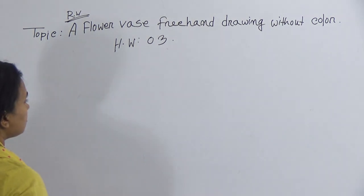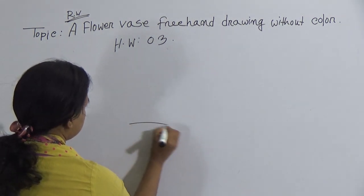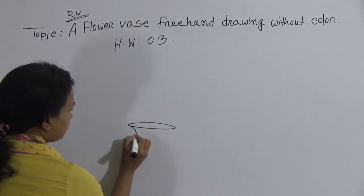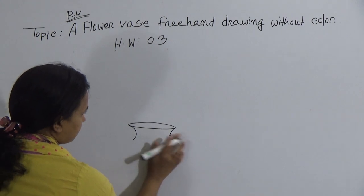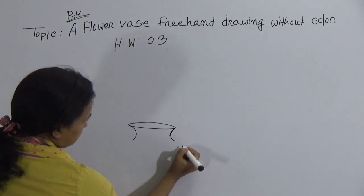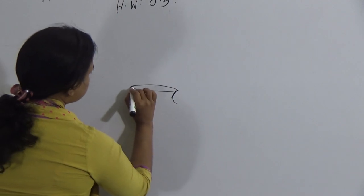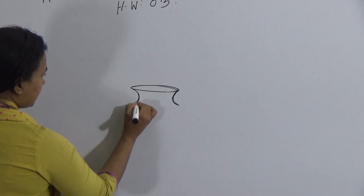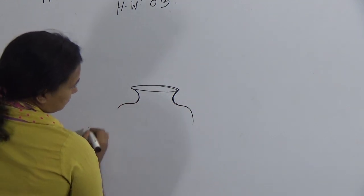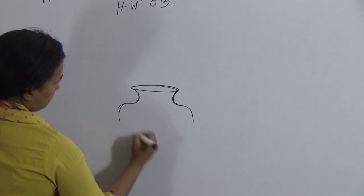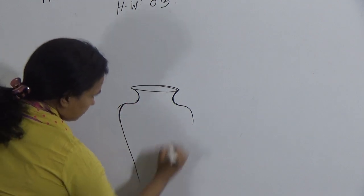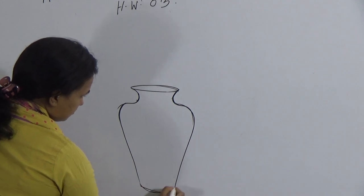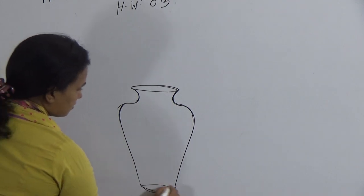First you will draw an oval, like this. Keep two curved lines from two sides. After that, this type of line you can use. And draw like this and join like this. This one is also oval.